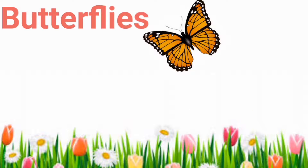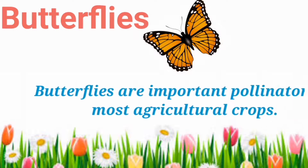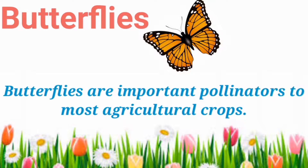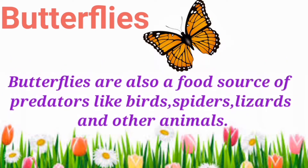What's the next insect? Butterflies. Butterflies are important pollinators to most agricultural crops. Butterflies are also the food source of predators like birds, spiders, lizards and other animals.